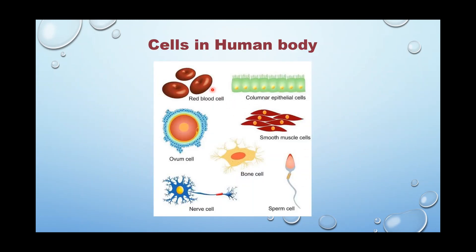Here you see many cells in the human body. From this picture, you can see red blood corpuscles, columnar epithelial cells, smooth muscle cells, bone cells, reproductive cells, and the nerve cell, which is the longest cell in the body. What we understand from this picture is that all cells are not of the same size and structure — they are different.